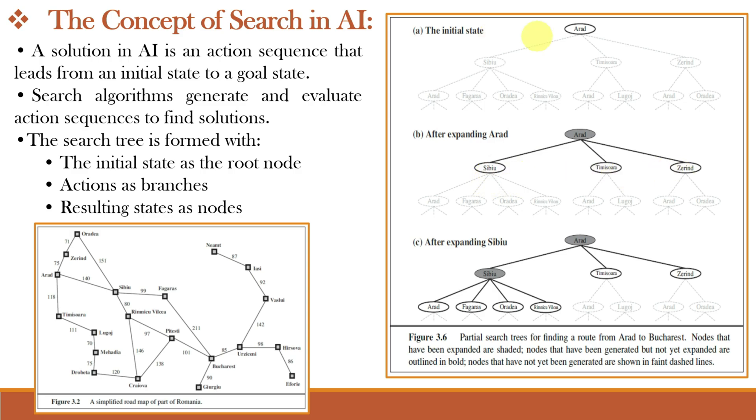In the figure, this initial state at city Arad is our root node. These branches are our actions. The resulting states or cities like CBU, Timisora and Zerin are our different nodes. Here we are finding a route from Arad to Bucharest using a search tree, and the map is like this which we have already seen earlier.